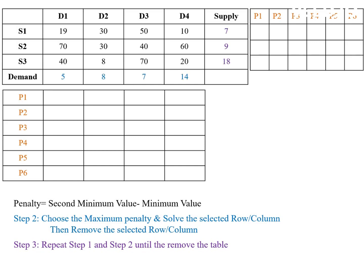For the given problem, first we have to find penalty 1 for rows and columns. Penalty for S1 row is 19 minus 10 — here 10 is the minimum value and 19 is the second minimum value — so penalty is 9. Similarly, penalty for S2 row is 40 minus 30, that is 10. And penalty for S3 row is 20 minus 8, that is 12.